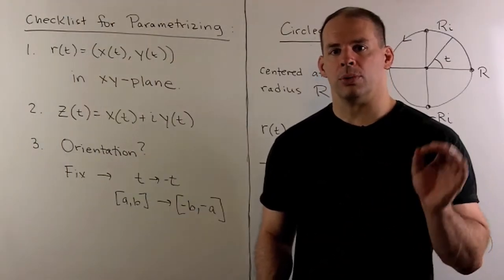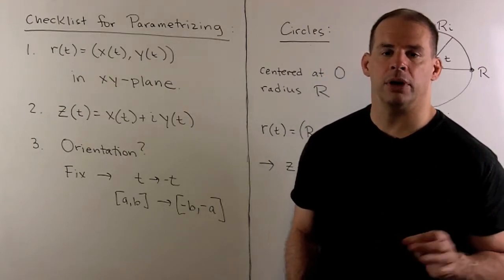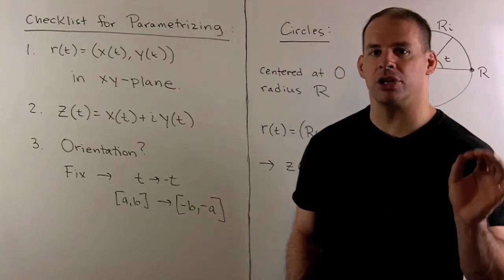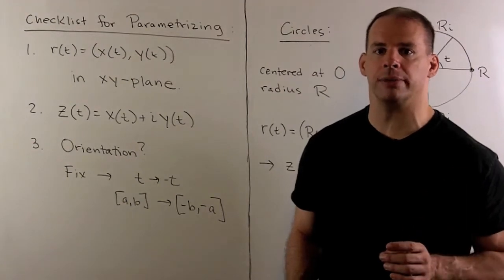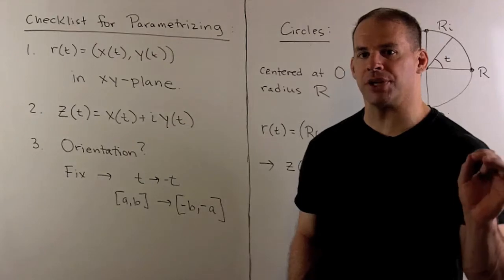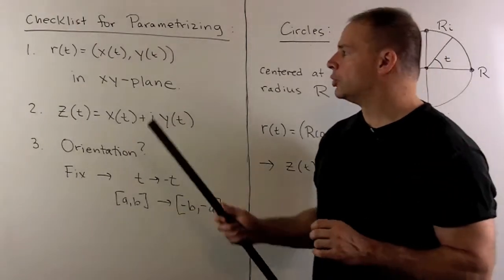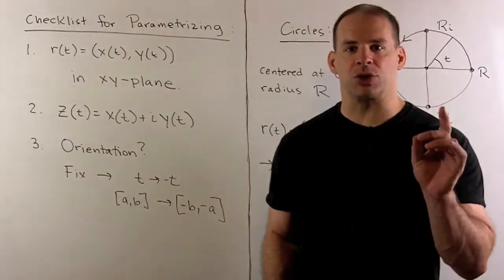In part one, we studied how to parametrize line segments in the complex plane. For this part, we want to parametrize circles and circular arcs.